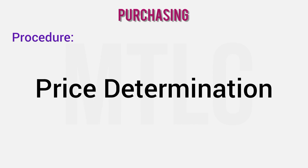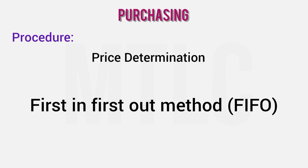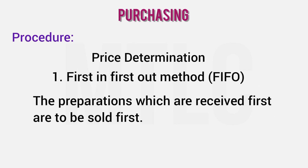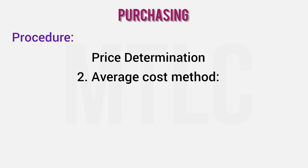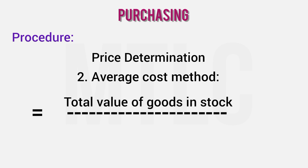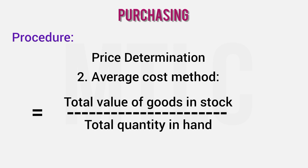To determine the price, the First In, First Out (FIFO) method is used — the first product purchased is sold first. In the average cost method, when new stock arrives, you calculate the total value of goods and divide the cost by the total quantity to fix the price.